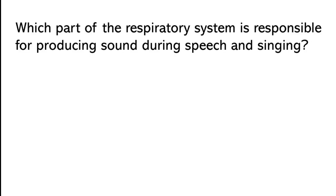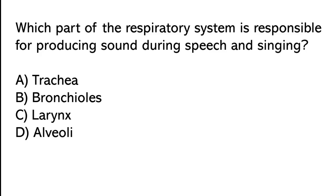Which part of the respiratory system is responsible for producing sound during speech and singing? Options: trachea, bronchioles, larynx, alveoli. The correct answer is option C. The larynx is the part of the respiratory system which is responsible for producing sound during speech and singing.